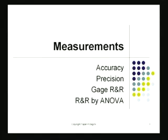We begin our lecture today with these pointers: I will give you an idea of what accuracy is, what precision is, and what gauge R&R means — and we will find out how to calculate gauge R&R. It is a number we must always estimate in order to make sound decisions regarding quality control.